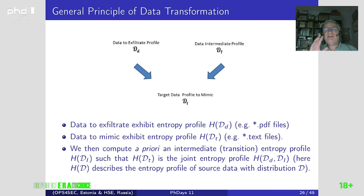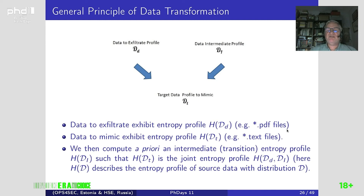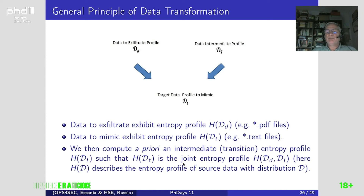Since the mathematics are rather complicated, let us sketch the general approach. You have data to exfiltrate with a given data profile — for example, PDF. And you want to exfiltrate data by mimicking some target data profile — for example, a text file. You want to exfiltrate the PDF data under the form of a text file.